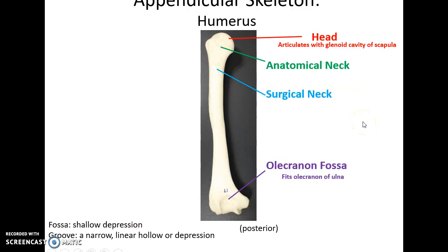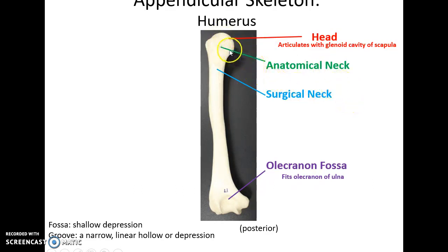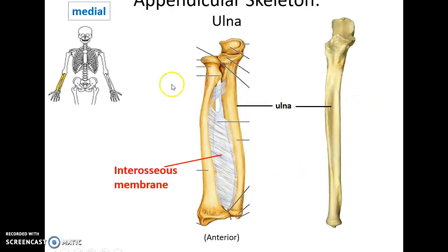Flip it over to the posterior view. You see the distal end has a large fossa called the olecranon fossa. Up at the proximal end, this rounded knob is the head of the humerus that articulates with the glenoid cavity of the scapula to form the shoulder joint. You have this little jagged line called the anatomical neck of the humerus, and then down here is the surgical neck — it's imaginary, but it's where the humerus often gets breaks.